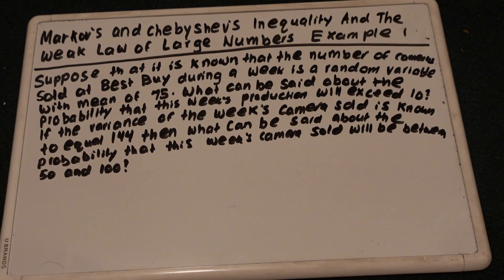Suppose that it is known that the number of cameras sold at Best Buy during the week is a random variable with mean of 75. What can be said about the probability that this week's production will exceed 10?